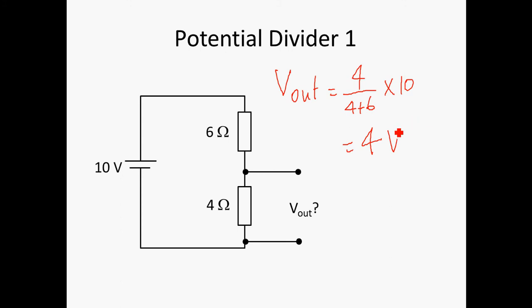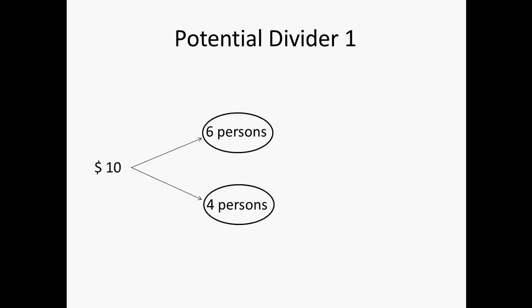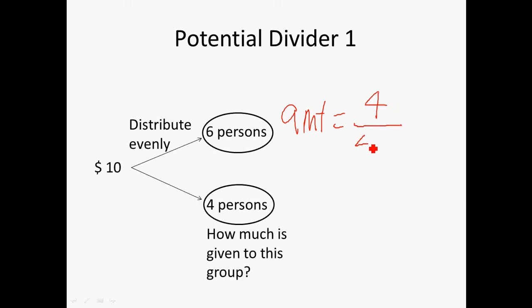To further explore this idea, we use an analogy using the same values. Imagine you have $10 and you want to split into 2 groups of persons. One group consists of 6 persons, the other 4 persons. If I say that they are going to be distributed evenly so that everyone gets the same amount of money, how much would the second group of 4 persons get? This is a very simple question. What you will do is that, to find the amount, you will simply put the ratio of the 4 persons over the sum of the total persons involved multiplied by 10. And you will get the same answer, which is $4.